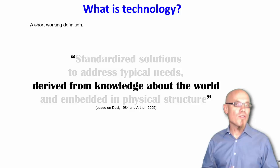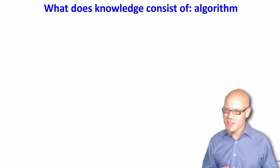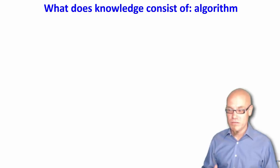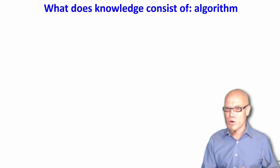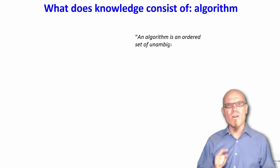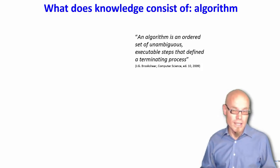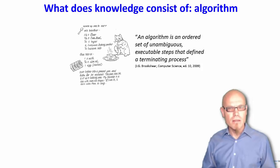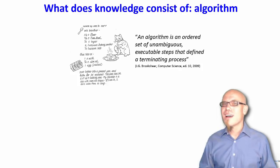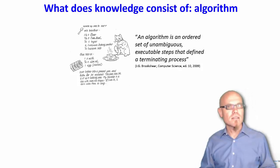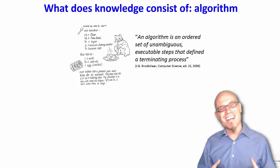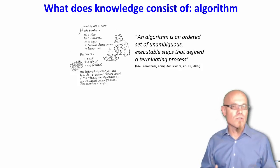Technology is derived from knowledge about the world. So what is knowledge? Here's another working definition: knowledge basically consists of algorithms. Now we replace the very ill-defined word 'knowledge' with a very well-defined word. An algorithm is an ordered set of unambiguous, executable steps that define a terminating process. For example, a cooking recipe is an ordered set of unambiguous, executable steps that define a terminating process — at the end you have a cake. So a cooking recipe is basically an algorithm, and a very casual way of describing an algorithm is just saying an algorithm is a recipe. You can usually replace the word 'algorithm' with 'recipe' and it will work.